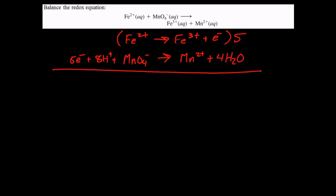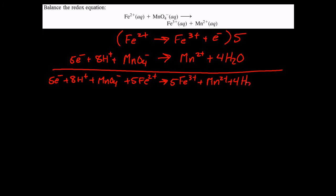So if we add those together, we will end up with five electrons, plus eight H plus, plus MnO4 minus, plus five iron two plus, goes to five irons. It would be helpful if I wrote it correctly, iron three plus, plus Mn two plus, plus four waters, plus five electrons.